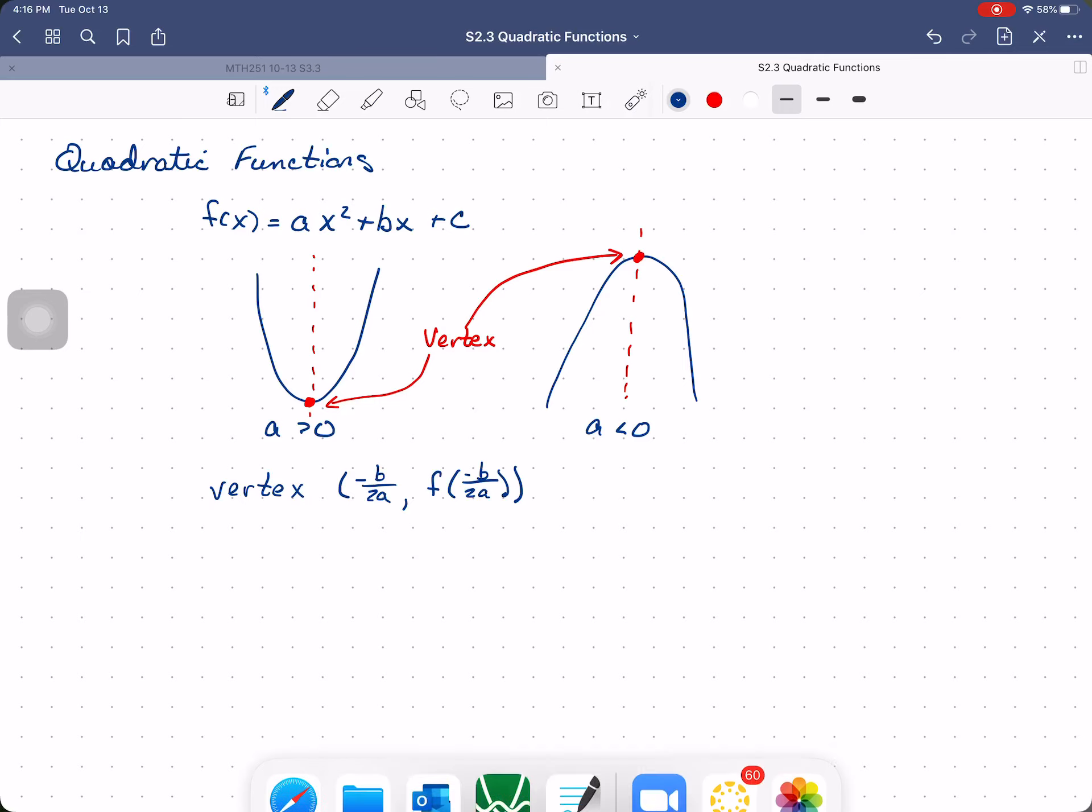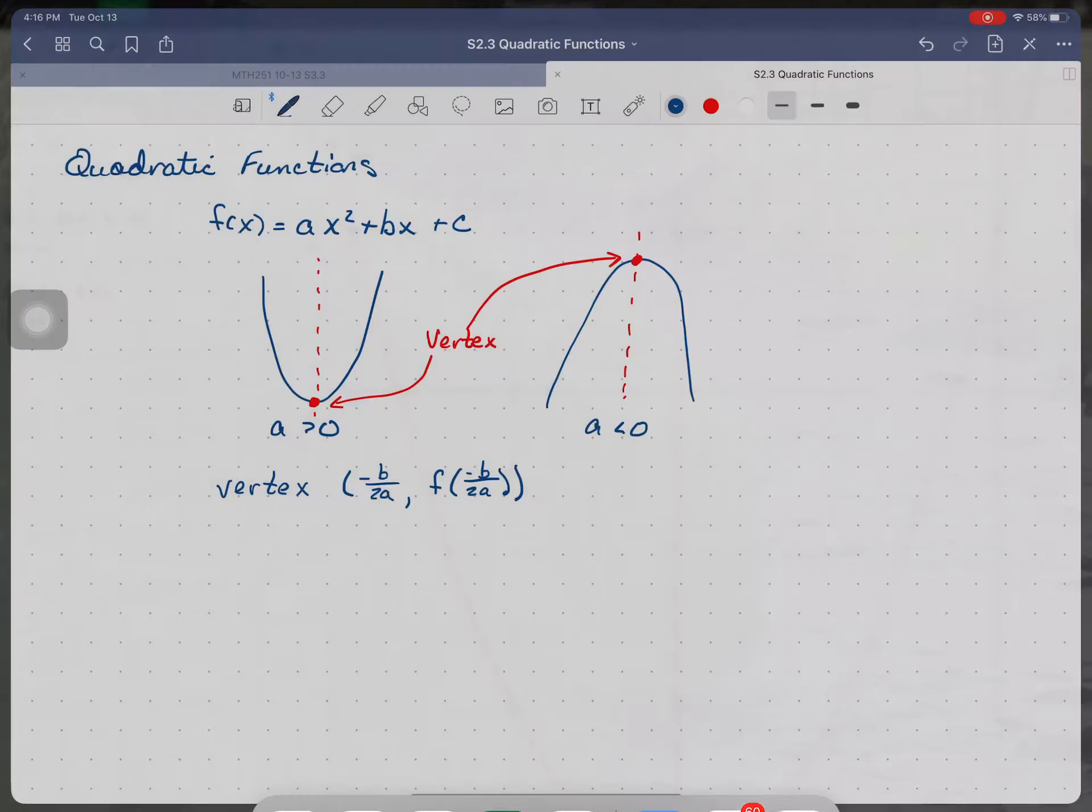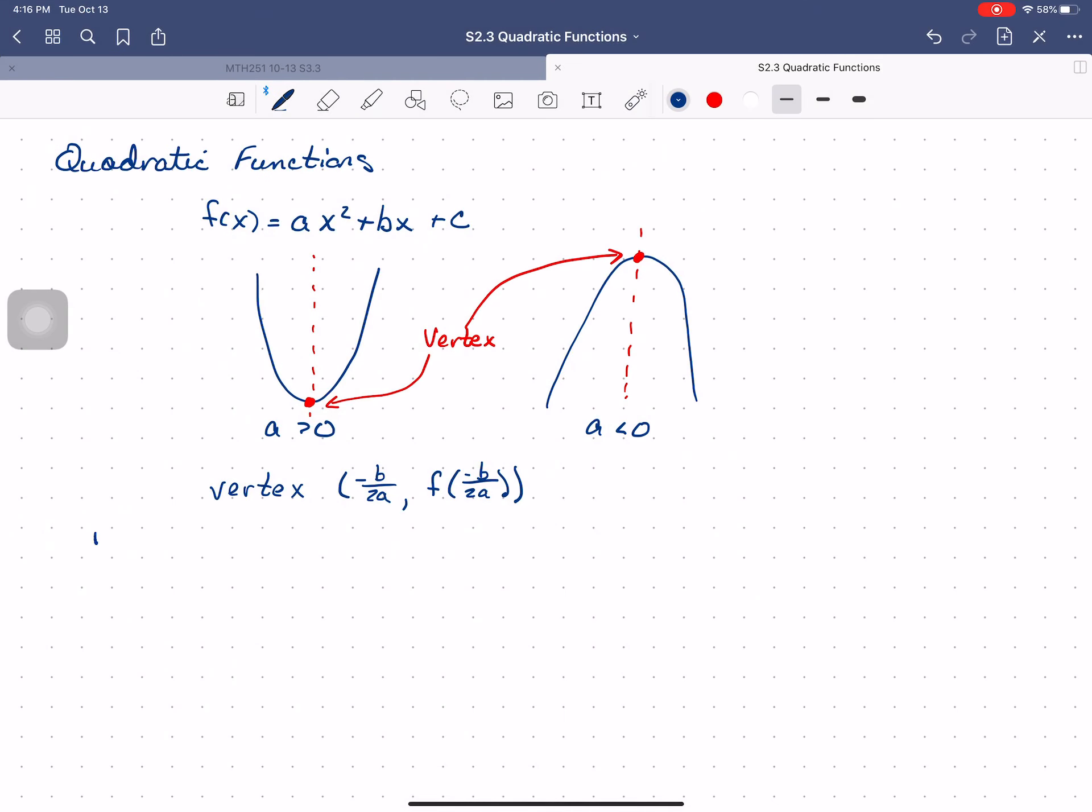So let's look at this one we had a minute ago, x² + 4x + 1. So consider the function f(x) = x² + 4x + 1. If we want to find the vertex...